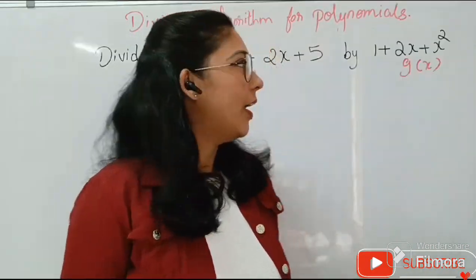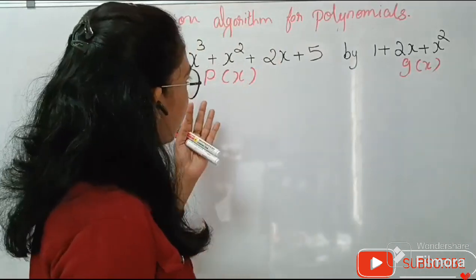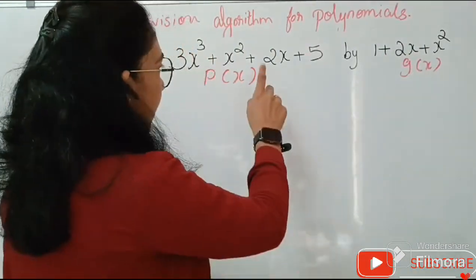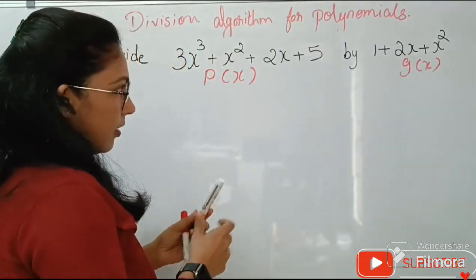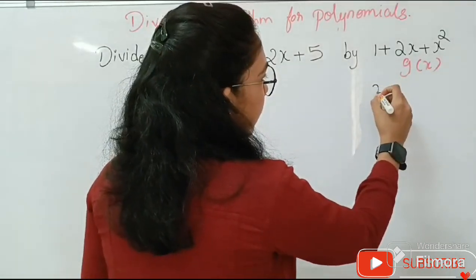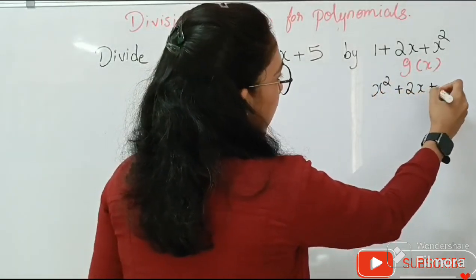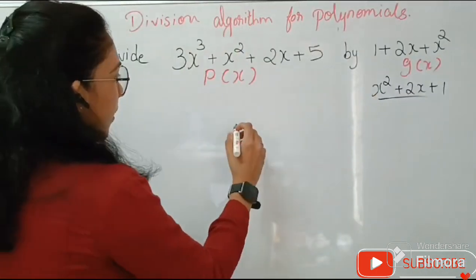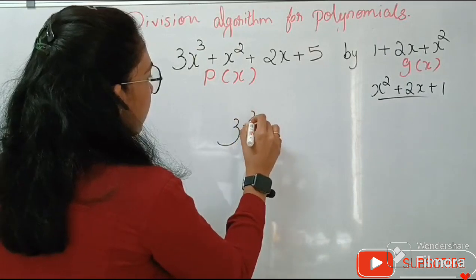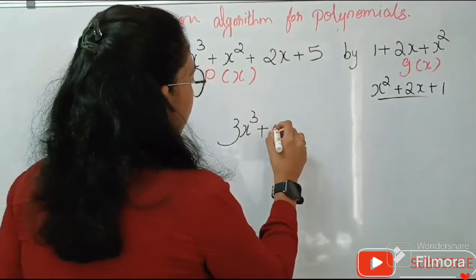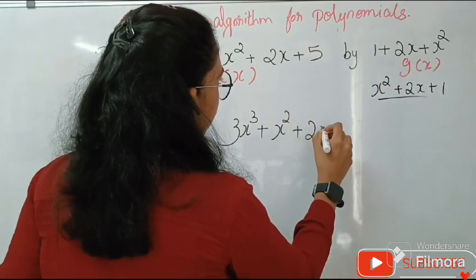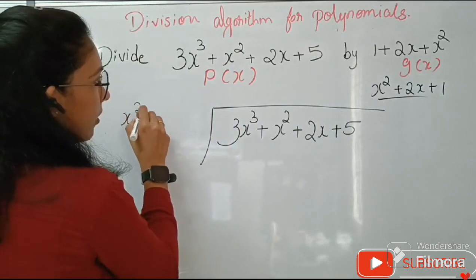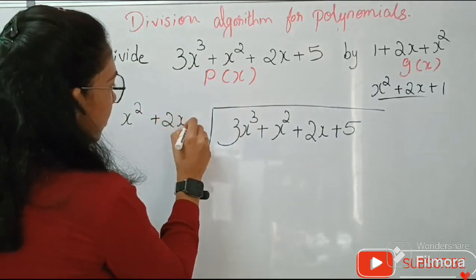One more question: divide 3X cubed plus X squared plus 2X plus 5 by 1 plus 2X plus X squared. So this is P of X and the divisor D of X can be rewritten as X squared plus 2X plus 1. Both forms are the same. We now divide 3X cubed plus X squared plus 2X plus 5 by X squared plus 2X plus 1.